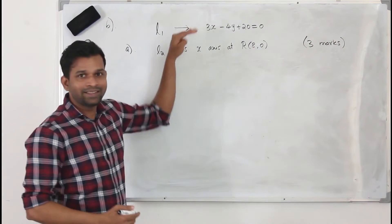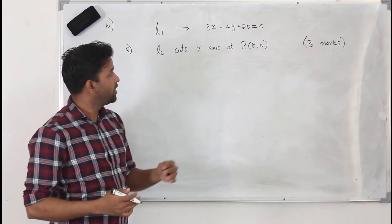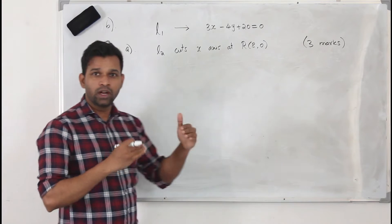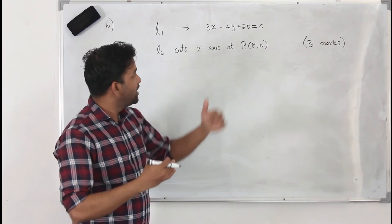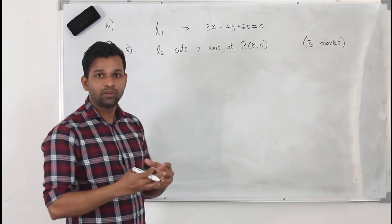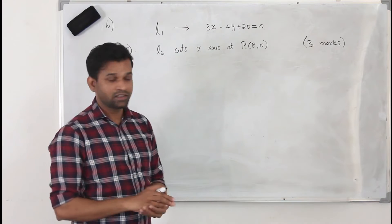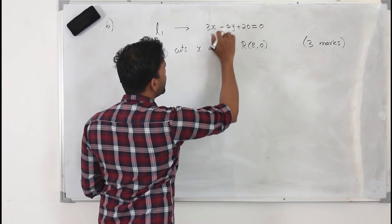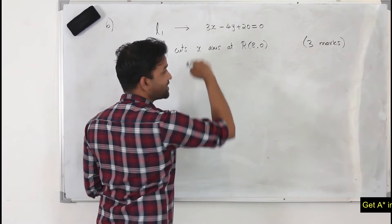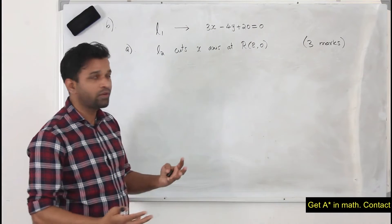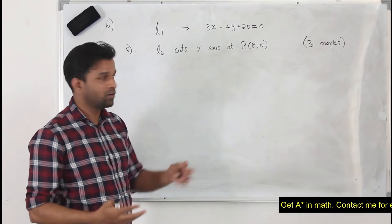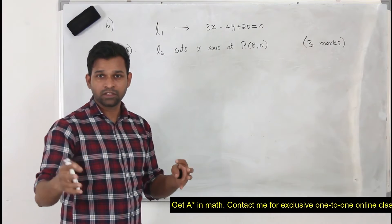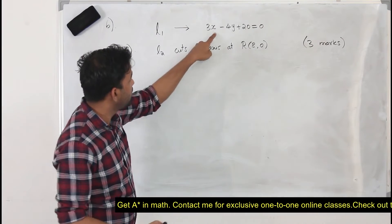If two lines are parallel — as we learned in straight line graphs — they will have the same gradient, the same slope. So you need to find the slope of this line. You cannot just take the coefficient of x as the slope; some people do that, but that's wrong.